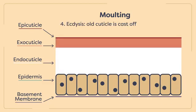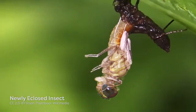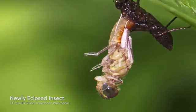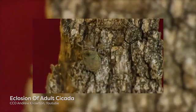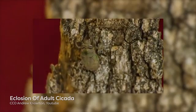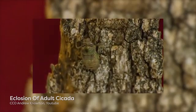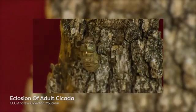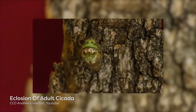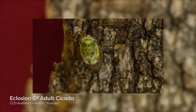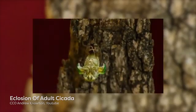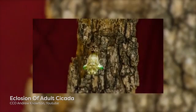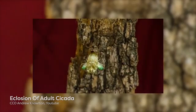When the arthropod first emerges from its old exoskeleton, the new cuticle is pale and soft. In order to increase its body volume and stretch the soft cuticle before it hardens, an arthropod will contract its muscles to increase internal fluid pressures within its body. The internal pressure can be further increased if the arthropod swallows air or water, inflating the gut to occupy more space in the body cavity.